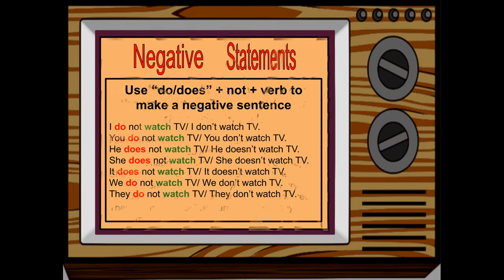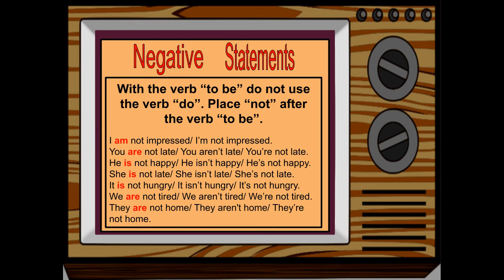When using the verb to be, we don't use the verb do — we just put not after the verb to be. We can use contractions, and there are a few options. I am not impressed / I'm not impressed. You are not late / you aren't late / you're not late. He is not happy / he isn't happy / he's not happy. She is not late / she isn't late / she's not late. It is not hungry / it isn't hungry / it's not hungry. We are not tired / we aren't tired / we're not tired. They are not home / they aren't home / they're not home.